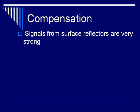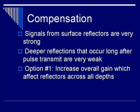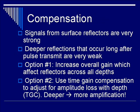Let's discuss compensation and how it's used. Signals from surface reflectors are very strong. On the other hand, deeper reflections that occur long after the pulse is transmitted are very weak. To balance things out, you have two options. The first option is to increase the overall gain, which unfortunately affects reflectors across all depths — so you have no balancing. However, you can opt for option two: time gain compensation, which adjusts for the increased amplitude loss with depth. Therefore, deeper reflectors get more amplification, whereas shallower reflectors get less.